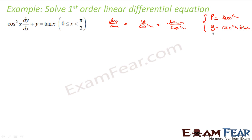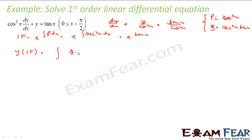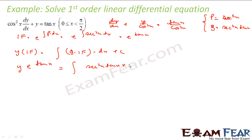This is the value of p and q. I will find the integrating factor: IF = e to the power of the integration of p dx, that is e to the power of the integration of sec²x dx, which equals e to the power tan x. This is my IF. My solution is y into IF equals integration of q times IF dx plus some constant. So y into e to the power tan x equals integration of sec²x tan x times e to the power tan x dx plus c.